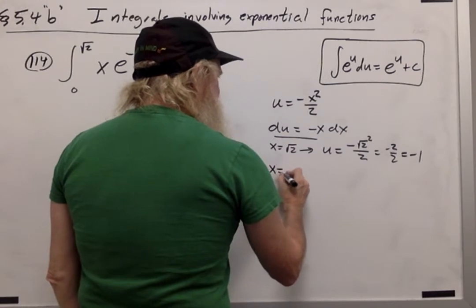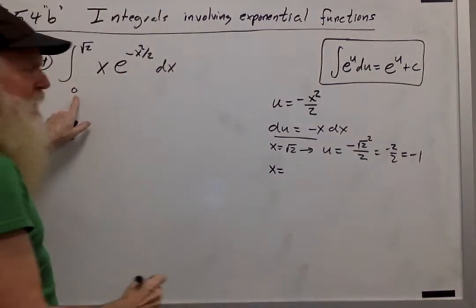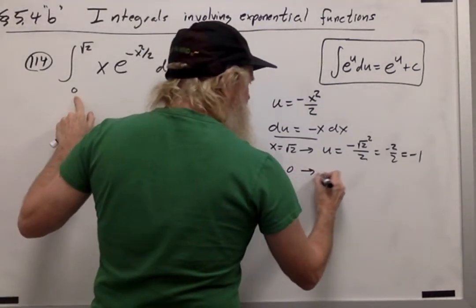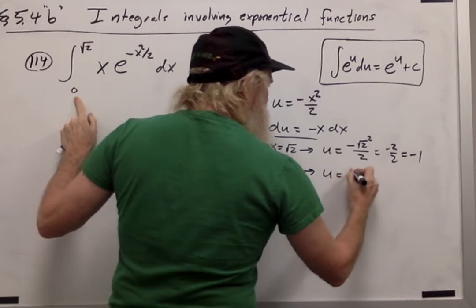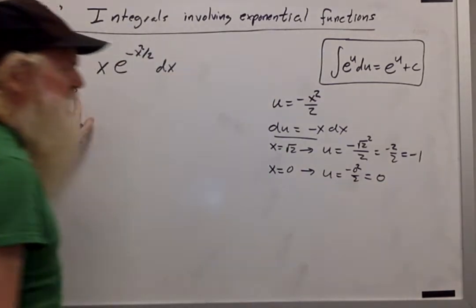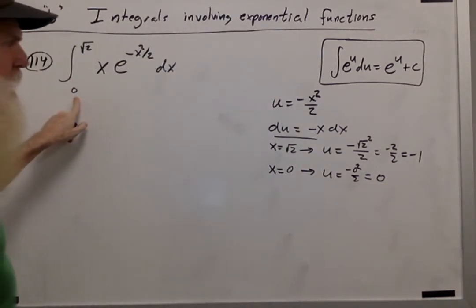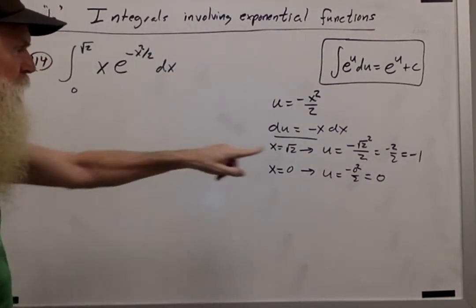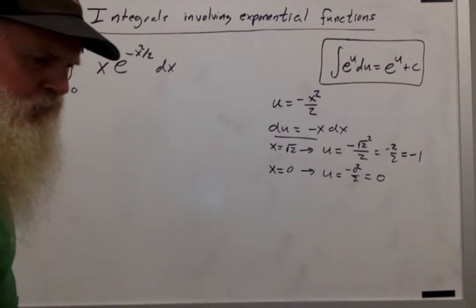And if x is equal to 0, which is my lower bound, u is equal to negative 0 squared over 2, which is 0. So my u bounds are from 0 to negative 1.